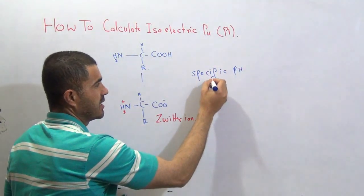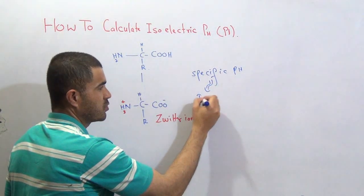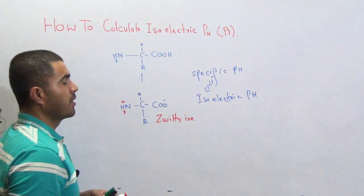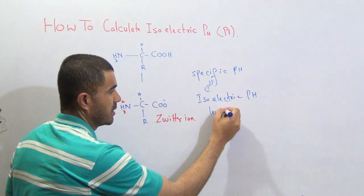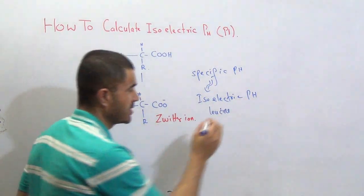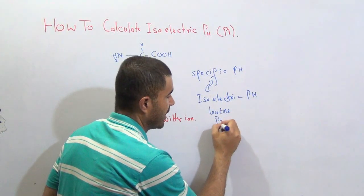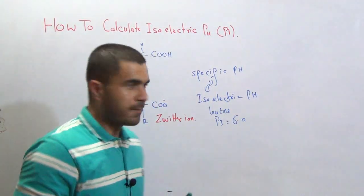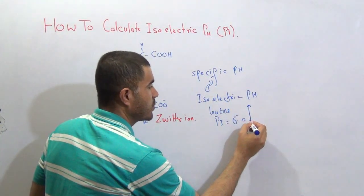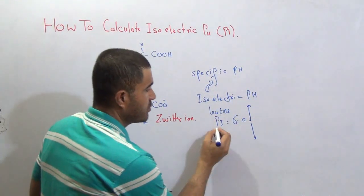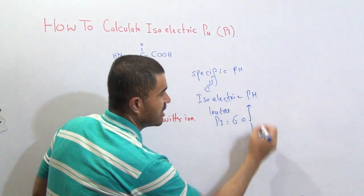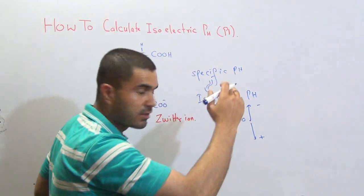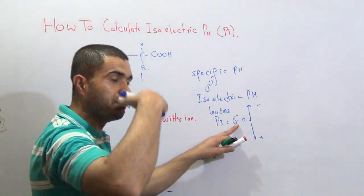The zwitterion condition of an amino acid can only exist at some specific pH. That specific pH is called the isoelectric pH. For example, leucine is an amino acid whose isoelectric pH (pI) is equal to 6.0. If you change the pH above or below 6.0, the leucine amino acid will either become positively charged or negatively charged.